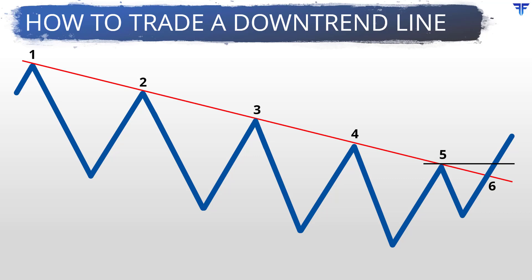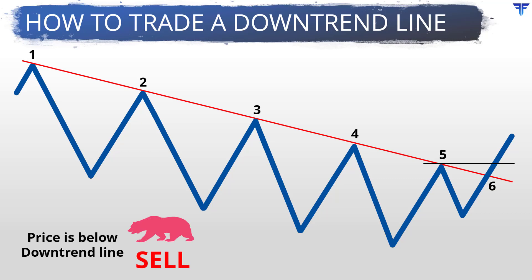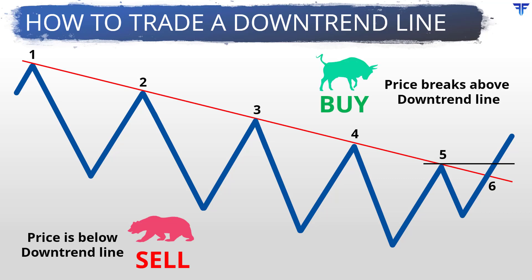In short, when a downtrend line is validated, one could use subsequent price recoveries towards the trendline to sell the security. However, once the downtrend line breaks, one should be looking to exit short positions and potentially look at creating new long positions.